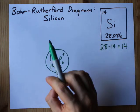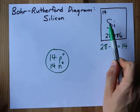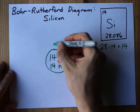Bohr-Rutherford diagrams are all about the electrons. Silicon, the neutral atom, is gonna need 14 electrons. So let's get to work.